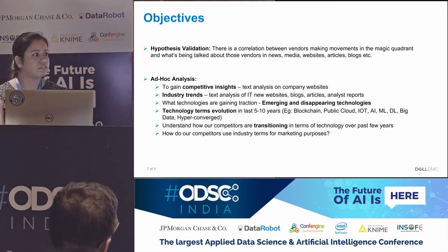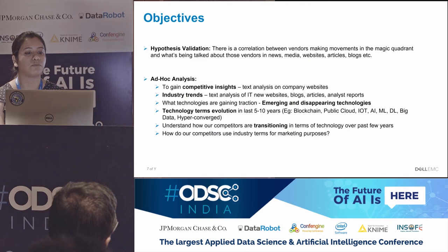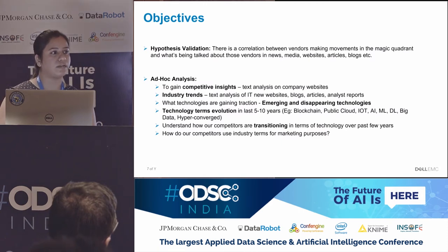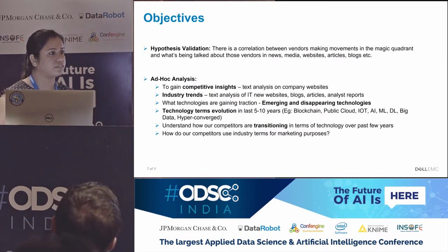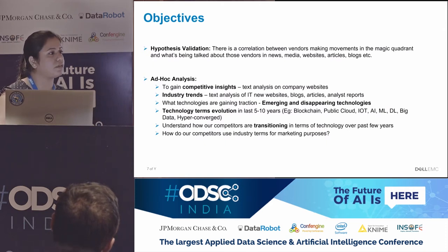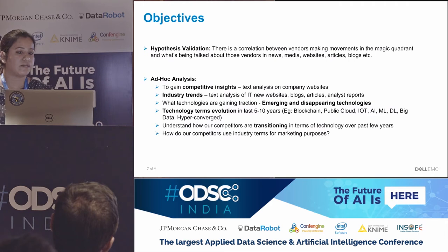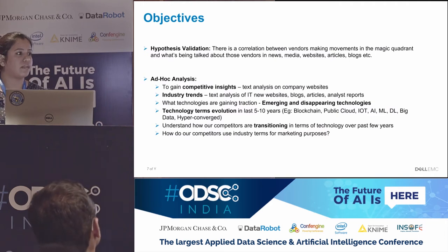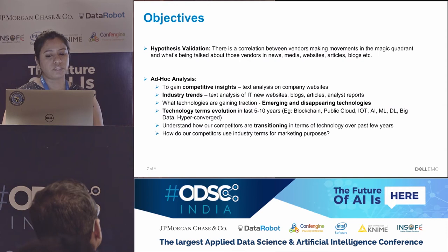We made a hypothesis about whether there is a correlation between what's being talked about these vendors in the market — news websites, articles, blogs — and whether that correlates with a vendor making a movement in the Magic Quadrant. The ad hoc analysis was for us to gain some competitive insights. I work in the competitive intelligence team, so a lot of my time is spent finding out what our competitors are up to in the market: what strategies or major announcements are they making, is there a new product launch, especially ones that are going to have an impact on our business. We did text analysis on company websites, industry trends, and emerging and disappearing technologies.